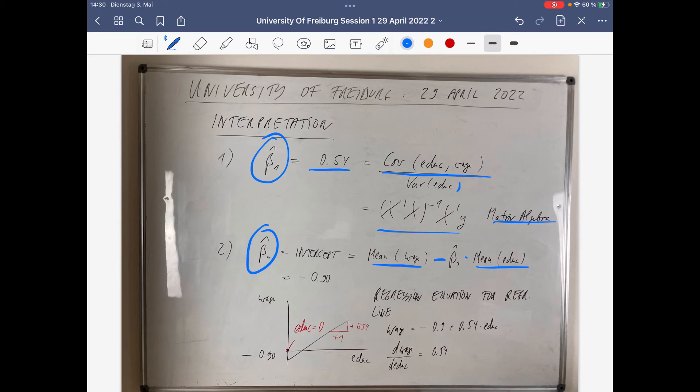Then you end up with a regression equation for the regression line. The regression line is a line with a slope of 0.54, and the intercept is negative, so it starts here.